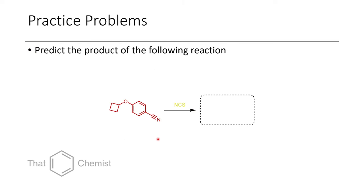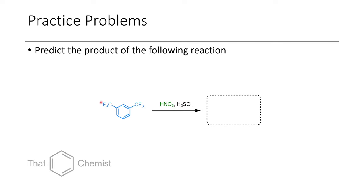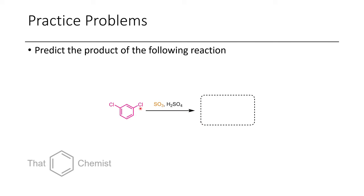For this lecture, I'd like to assign three practice problems. First, predict the product when an ether-containing nitrile is treated with N-chlorosuccinimide. In the next problem, 1,3-bis-trifluoromethylbenzene is treated with nitric acid under standard nitrating conditions — what product forms? Finally, 1,3-dichlorobenzene is treated with oleum — what sort of product forms? I hope this has been a useful lecture on SEAR or EAS reactions. If you have any questions or comments, please leave them below, and it would really help if you left a like and subscribed.